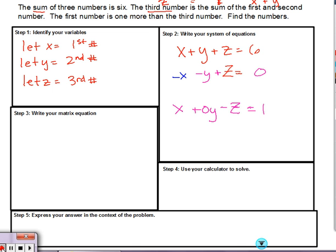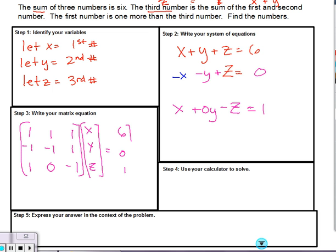So you should have gotten this. Notice we put a zero in front of the y to hold its place. Now that we've got this, we can set up our matrix equation. So we go with our coefficients. We need to make sure first all our x's are lined up, our y's are lined up, and all our z's are lined up. So we've got 1, 1, 1. Negative 1, negative 1, 1, 0, negative 1. This is our first 3 by 3 matrix. We've got our x, y, z, our variable matrix. And we've got our solution matrix: 6, 0, 1.